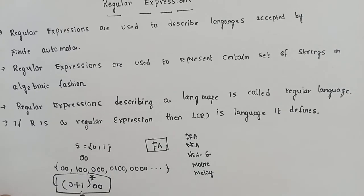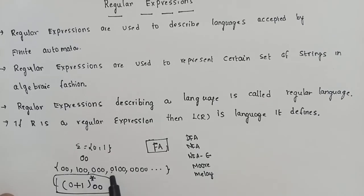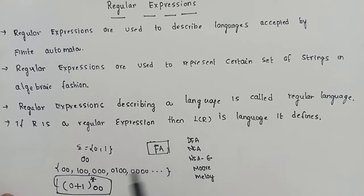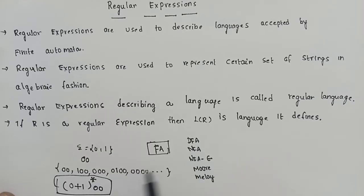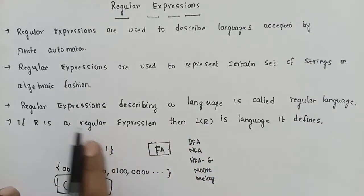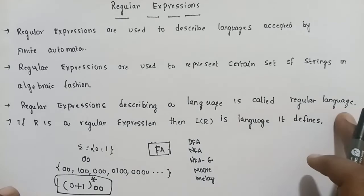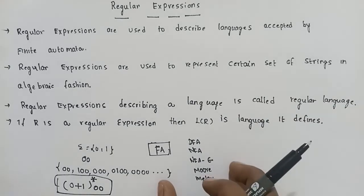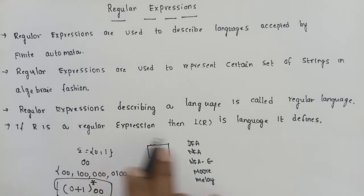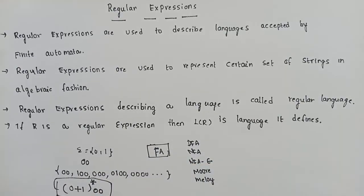The regular expression definition: it is used to describe the language accepted by the finite automata in an algebraic fashion, in expression format. Finite automata accepts a language. A regular expression describing a language is called the regular language. So if R is a regular expression, then the language of R is a regular language.